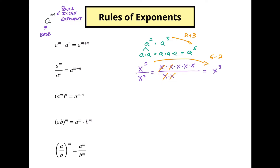This next one I call the power of a power, because we've got a power and a power here. If we've got the power of a power, then we're going to multiply those two things together. Let's say we have a squared times a squared times a squared. Since we're multiplying three bases together, we add the exponents: two plus two plus two gives us a to the sixth. So this is the same thing as saying two times three, which gives us a to the sixth power.